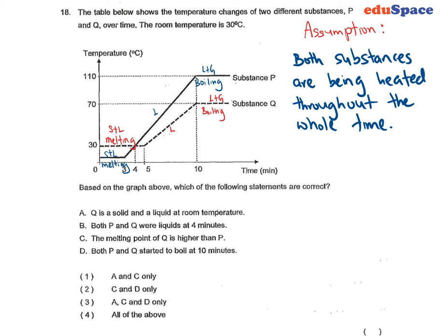We will see that for the first flat line of both substances, they are showing melting where the temperature didn't change. And they are both in solid and liquid state during the first flat line. So when melting finishes, it turns into liquid state.